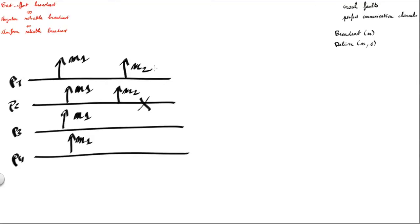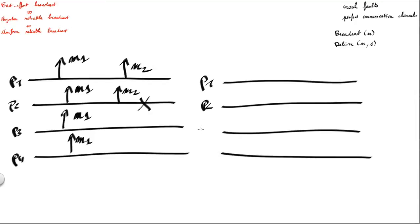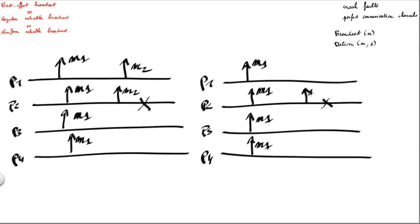Let's now consider the regular reliable broadcast abstraction. Still using four processes P1, P2, P3, and P4, message M1 broadcast by correct process P1 would still be received by all processes. The interesting point is what does regular reliable broadcast guarantee regarding M2? It guarantees that if a message is delivered by a correct process, then it should be delivered by all correct processes. So M2, in our previous example, is delivered by P2 which is faulty, but also by P1 which is correct. That means this message should also be delivered by all other correct processes — so P3 and P4 must both deliver message M2.